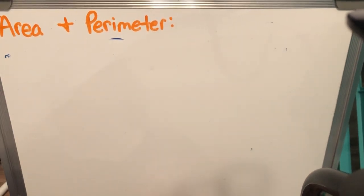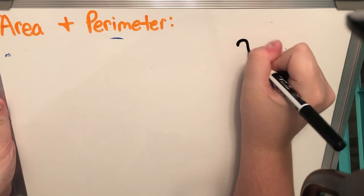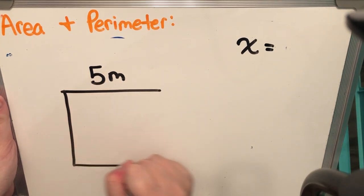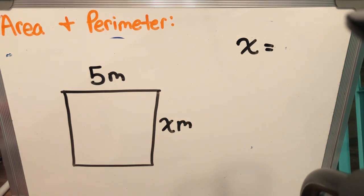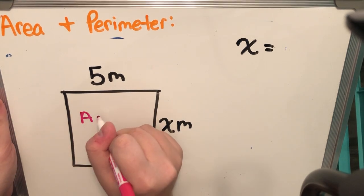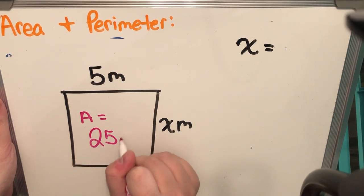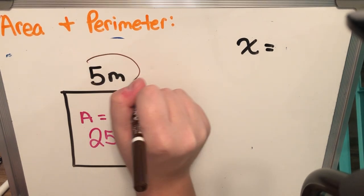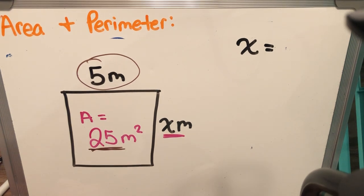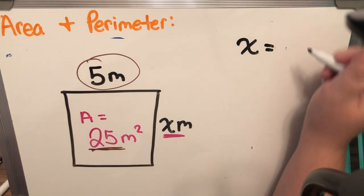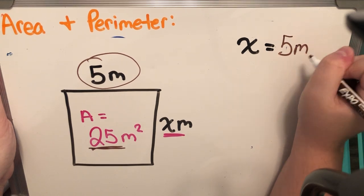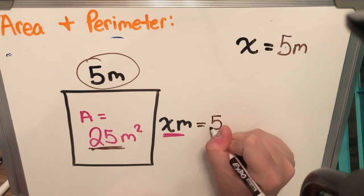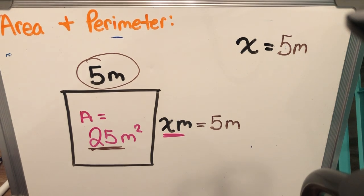Now we are going to try to find the missing side, which is X. We are given five meters and X meters, and the problem gives us the area: 25 meters squared. To find the missing side, ask yourself: what times five gives me an area of 25? If you know your five times tables, five times five is 25. So your missing side is five meters. That one wasn't too terrible — pretty simple.